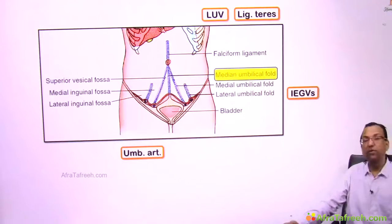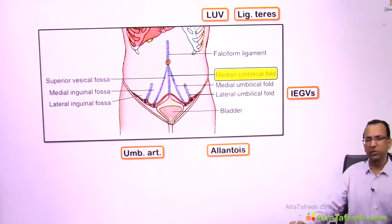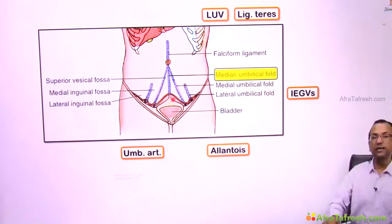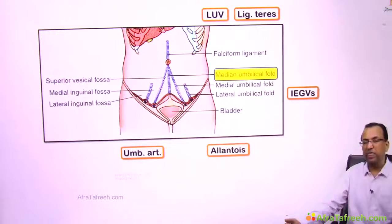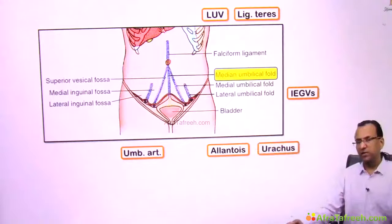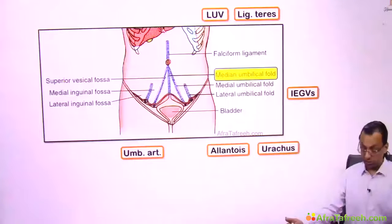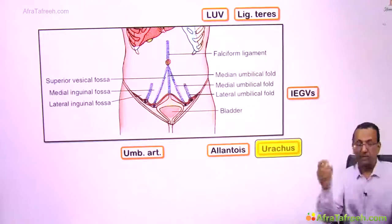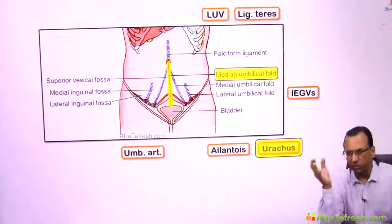The median umbilical fold is in the midline and covers the urachus. In the fetus, the allantois is a hindgut diverticulum attaching to the apex of the urinary bladder. In the adult, the lumen of the allantois is obliterated to become the fibrous urachus, which runs towards the umbilicus producing the median umbilical fold.